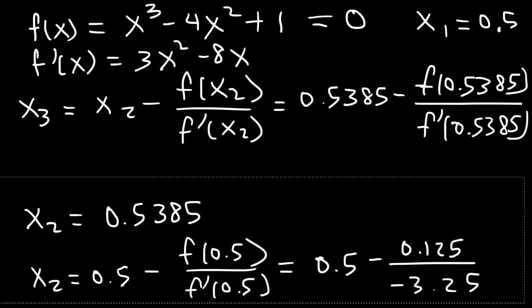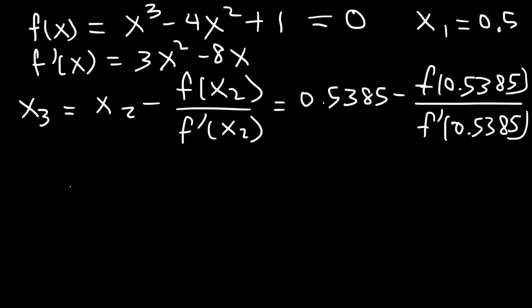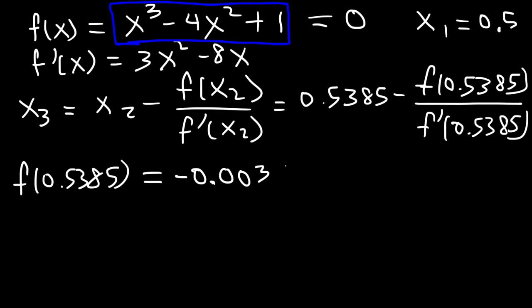So let's evaluate the function at x2. So f of 0.5385, let's plug it in into this equation. So go ahead and type it in your calculator. 0.5385 raised to the third power minus 4 times 0.5385 squared plus 1. Make sure you type in everything correctly. If you make one mistake, the whole problem is ruined. So this is negative 0.003774. You might see it as 3.774 times 10 to the minus 3, but it's the same.